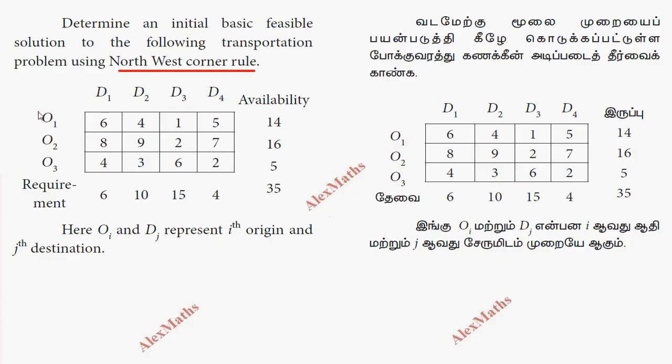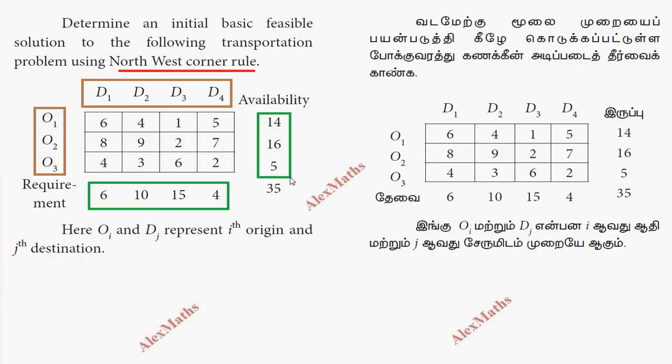In the table, we have sources O1, O2, O3 and destinations D1, D2, D3, D4. The destinations are the locations where goods are transported to. We have the requirements at each destination and the availability at each source.